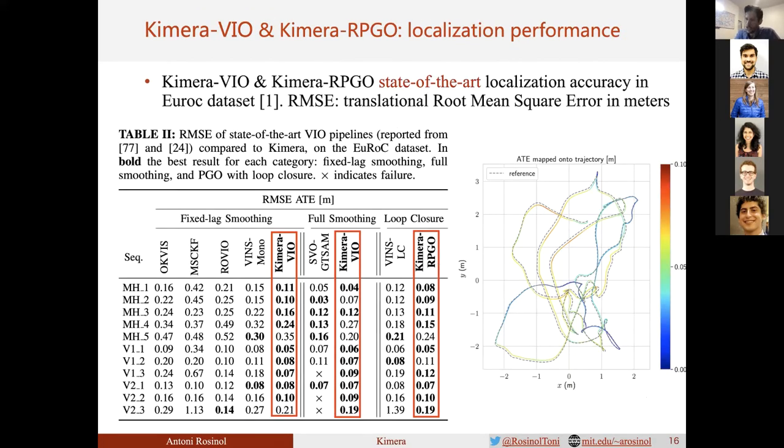Here we show our localization results. We evaluate our approach on the EuRoC dataset and report the translational root mean square error, which quantifies the distance between estimated and ground-truth poses. We run our approach in three modes: fixed-lag smoother, the sliding window approach for real-time state estimation; full smoother, which optimizes the full trajectory without loop closures; and finally, with loop closures. We compare our approach to well-known open-source alternatives and show superior performance. On the right, you see the estimated trajectory in color compared with ground truth as a dashed line.